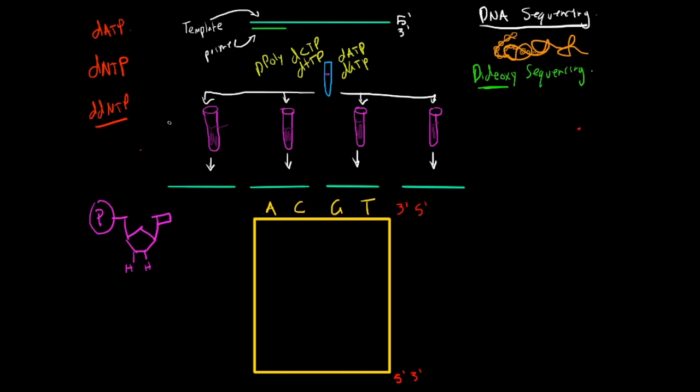So let's say in this one we add, I'll do this in another color, dideoxy adenosine triphosphate. And in this one we do dideoxyribonucleoside, and then guanine, and then thymine.